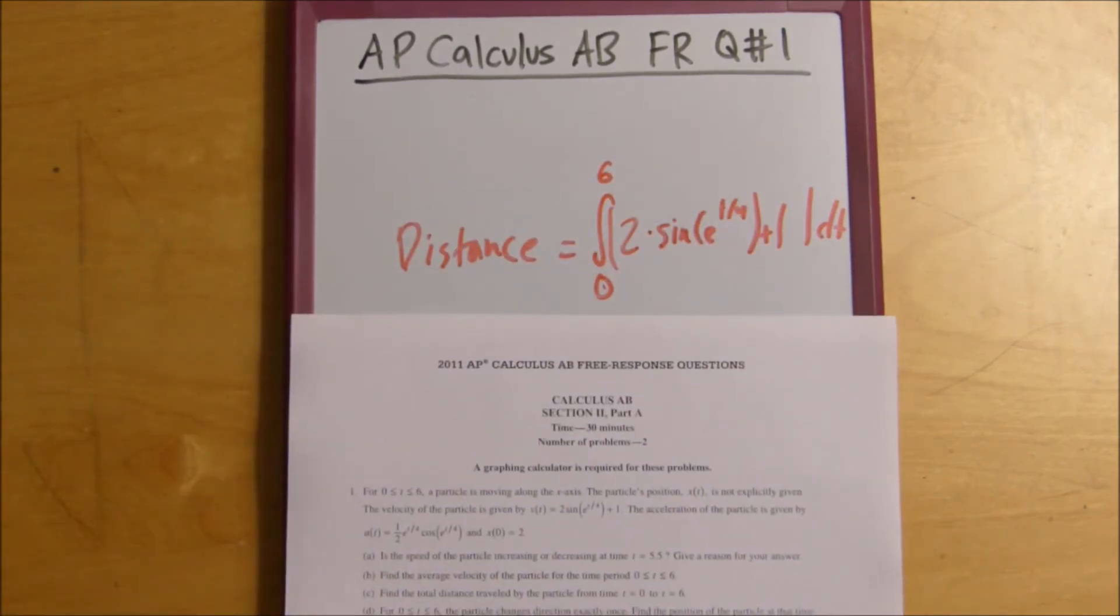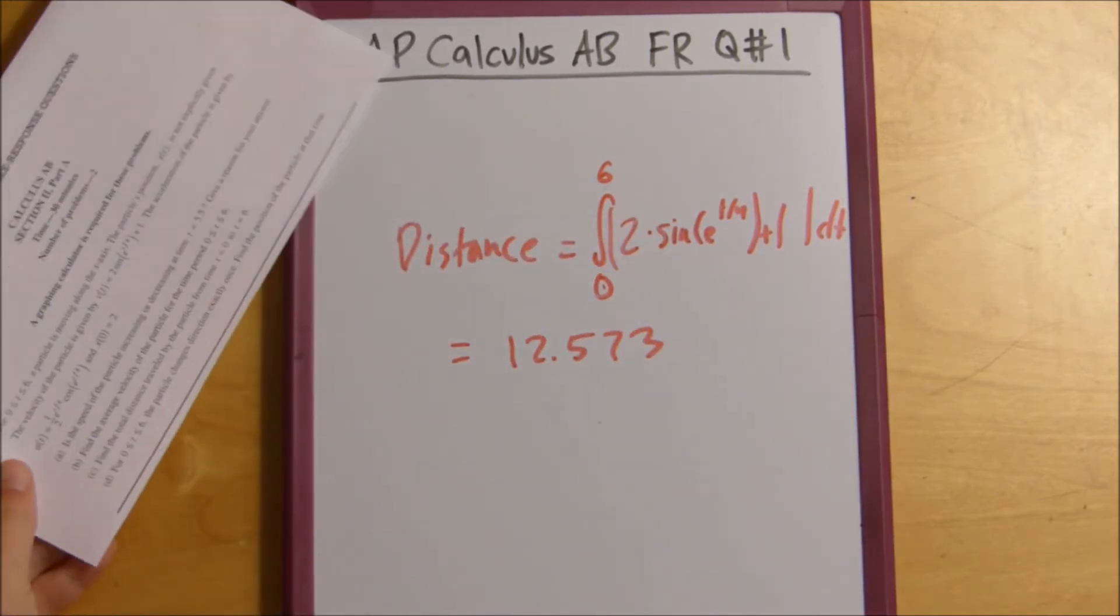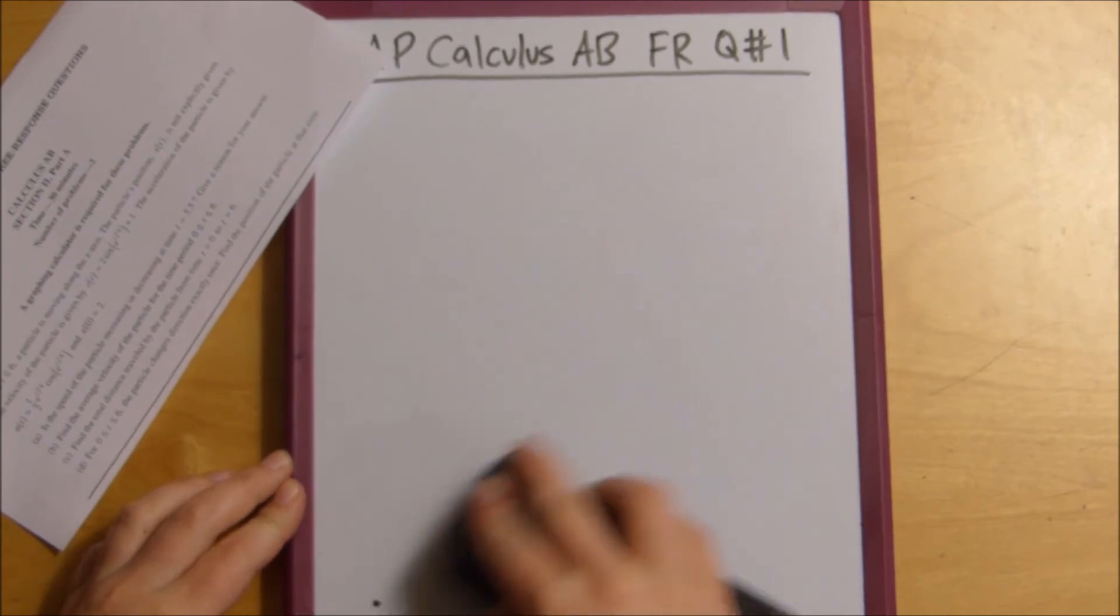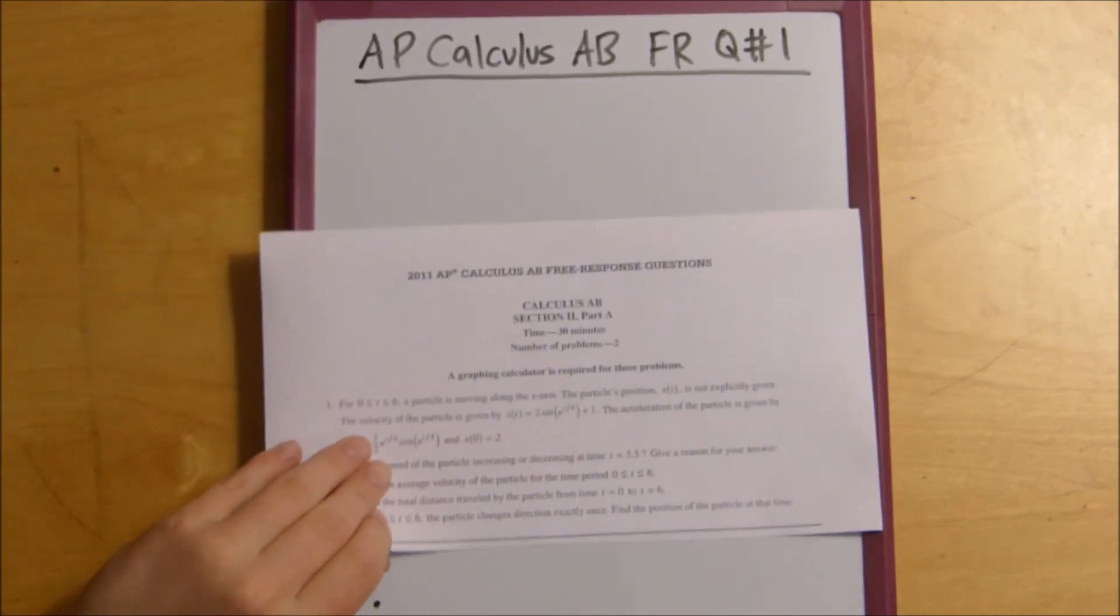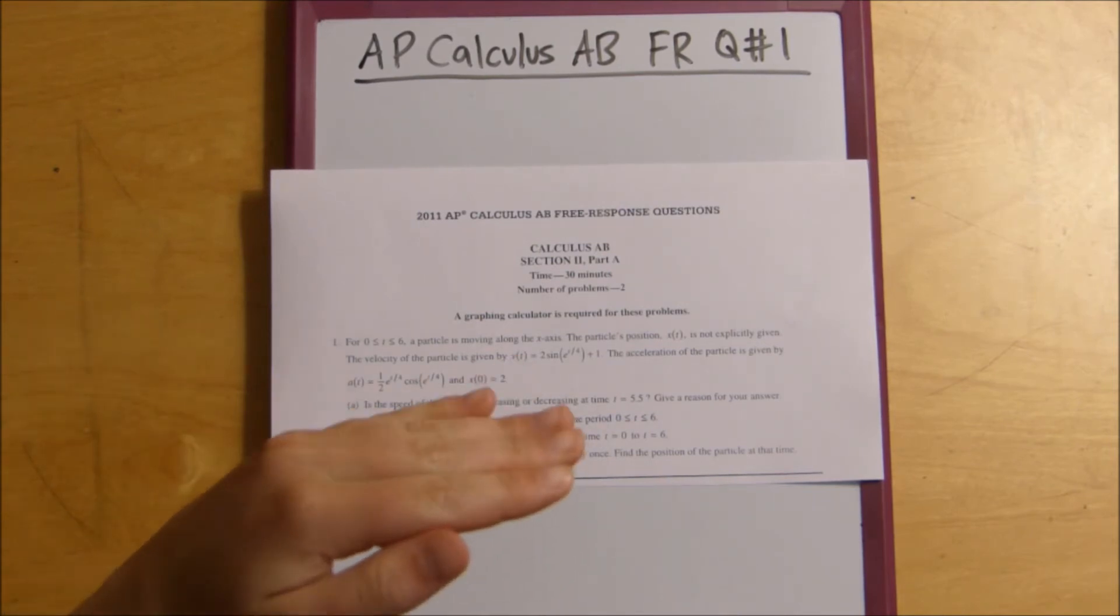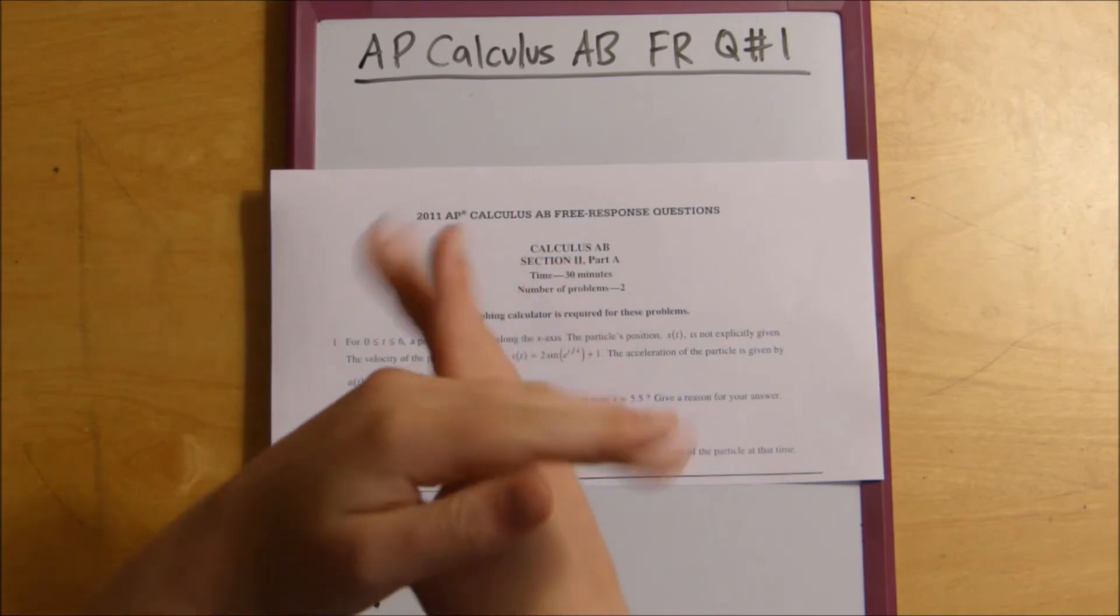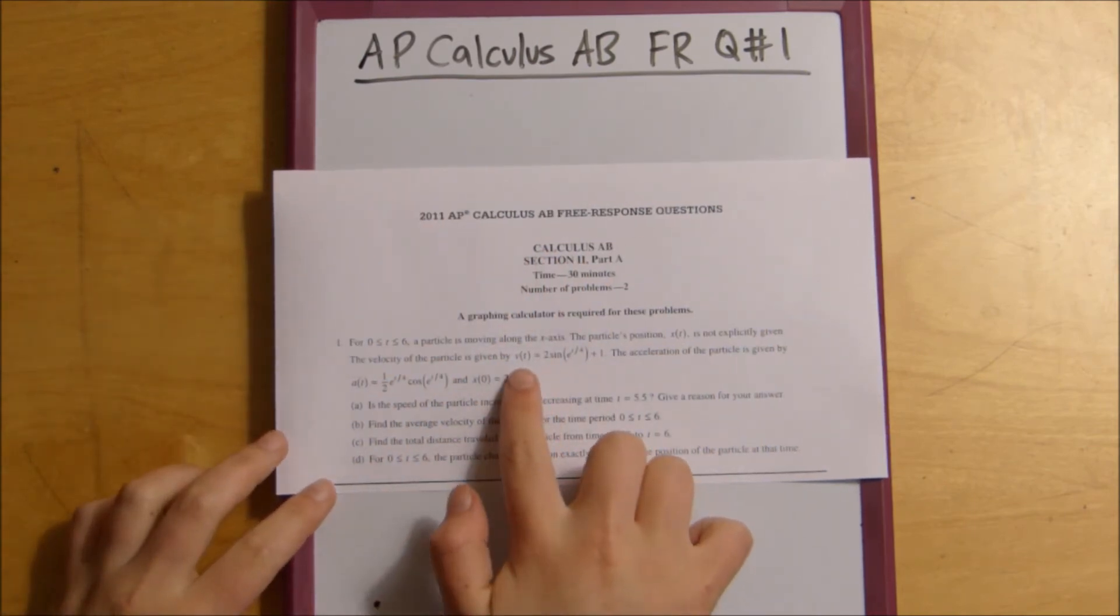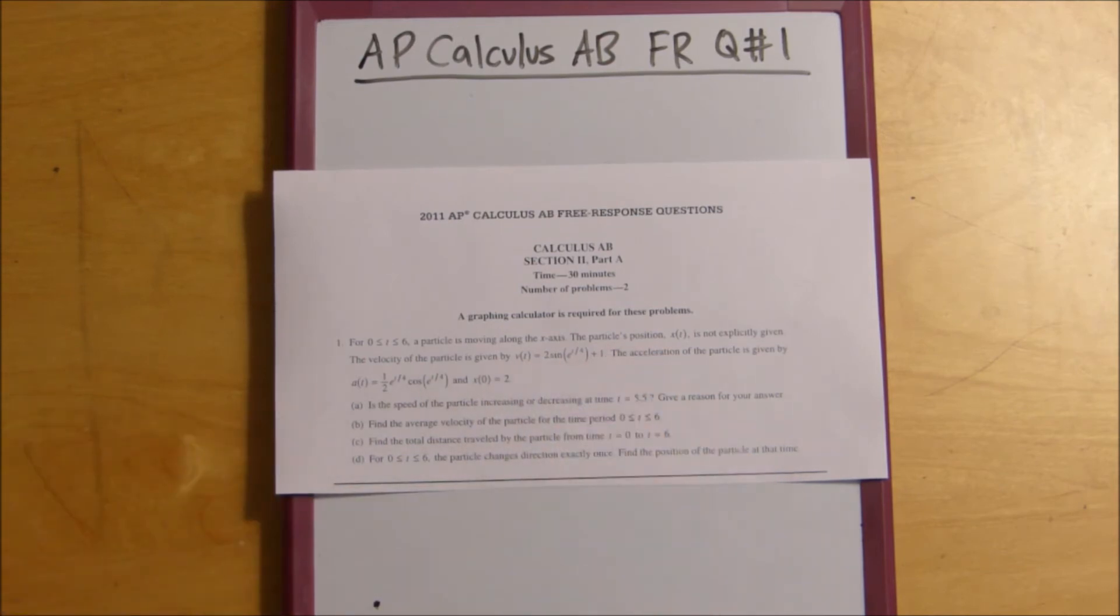And then for our final answer, it says for 0 is less than t is less than 6, the particle changes direction exactly once. Find the position of the particle at that time. So, what we're going to want to do is we're going to want to find where this particle changes direction. And when the problem says it changes direction, that means that the velocity goes from negative to positive or from positive to negative. So, we're going to want to find where velocity equals 0.